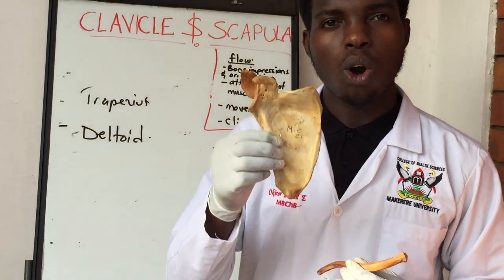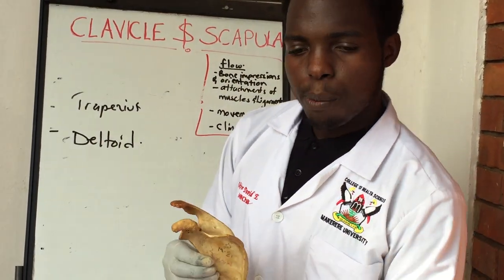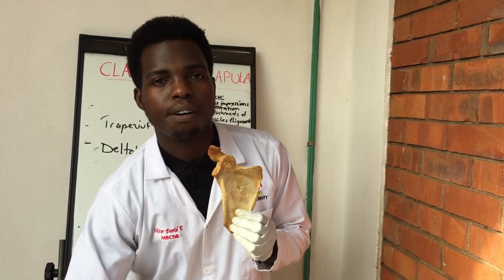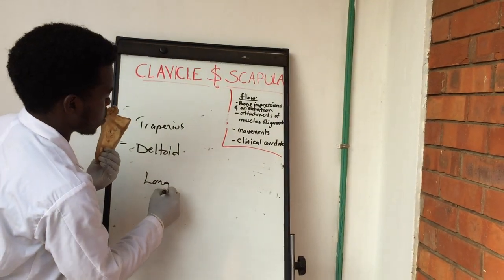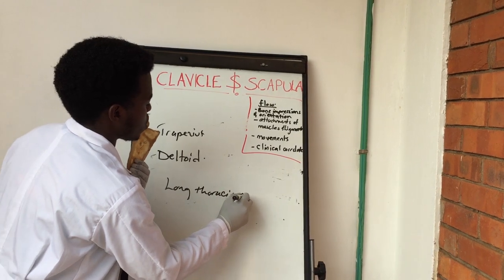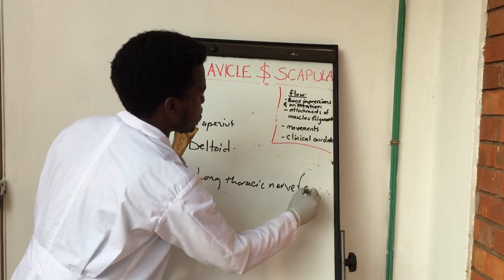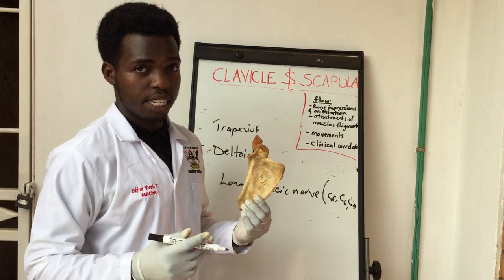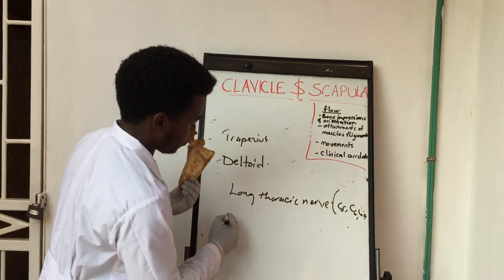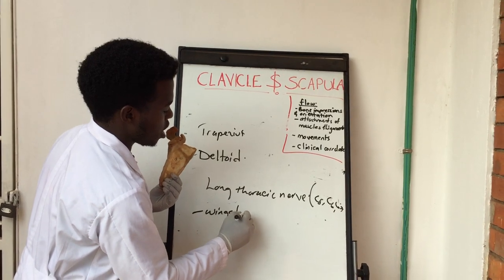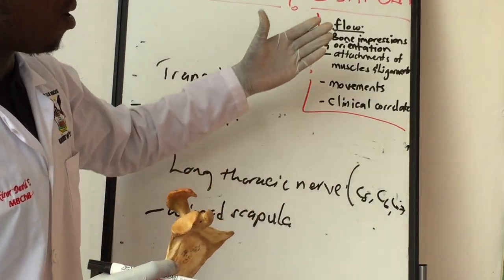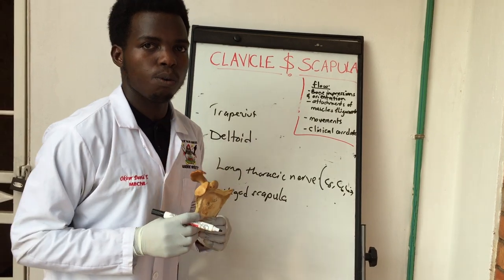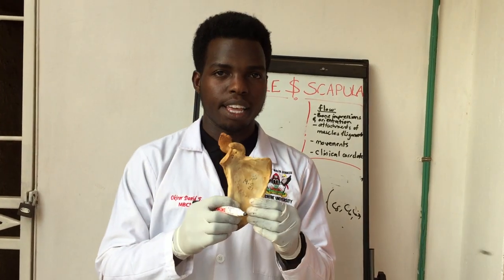For the clinical correlate of the scapula: the serratus anterior, which attaches on the inner aspect of the medial border, is supplied by the long thoracic nerve, arising from roots C5, C6, and C7. If the long thoracic nerve is injured, there will be a defect in the serratus anterior, resulting in a condition known as winged scapula. We have now looked at bone impressions, muscle and ligament attachments, movements, and clinical correlates of both bones.